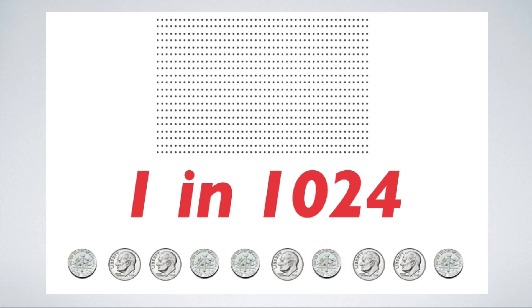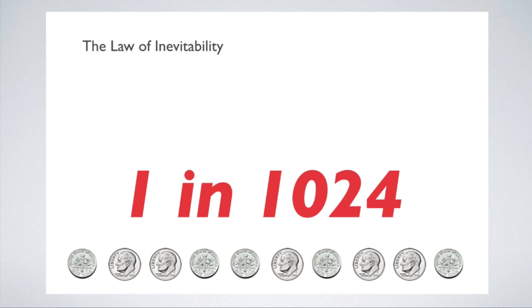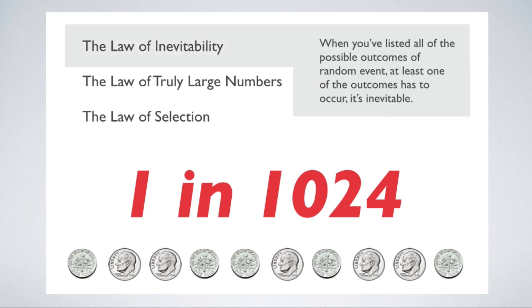But we can use this example to illustrate some of the probability assumptions that we mentioned earlier, the ones that we need to consider when we encounter what seem to be highly unlikely events. Looking at David Hand's list, there are three that seem to apply. The law of inevitability, the law of truly large numbers, and the law of selection. The law of inevitability says that when you've listed all the possible outcomes of a random event, at least one of the outcomes has to occur. It's inevitable.